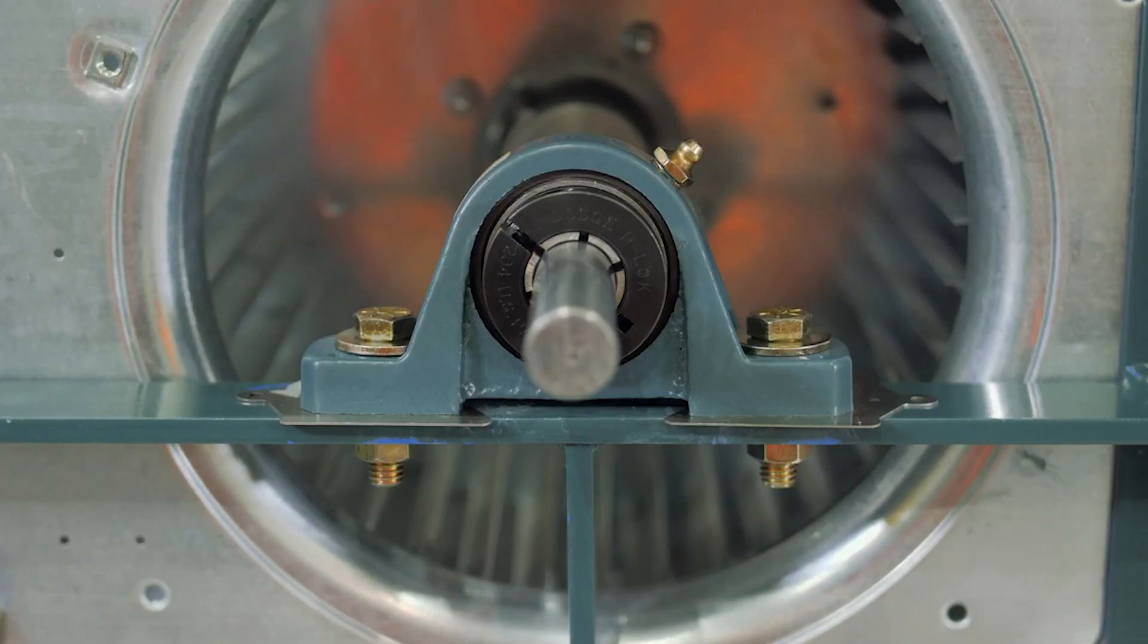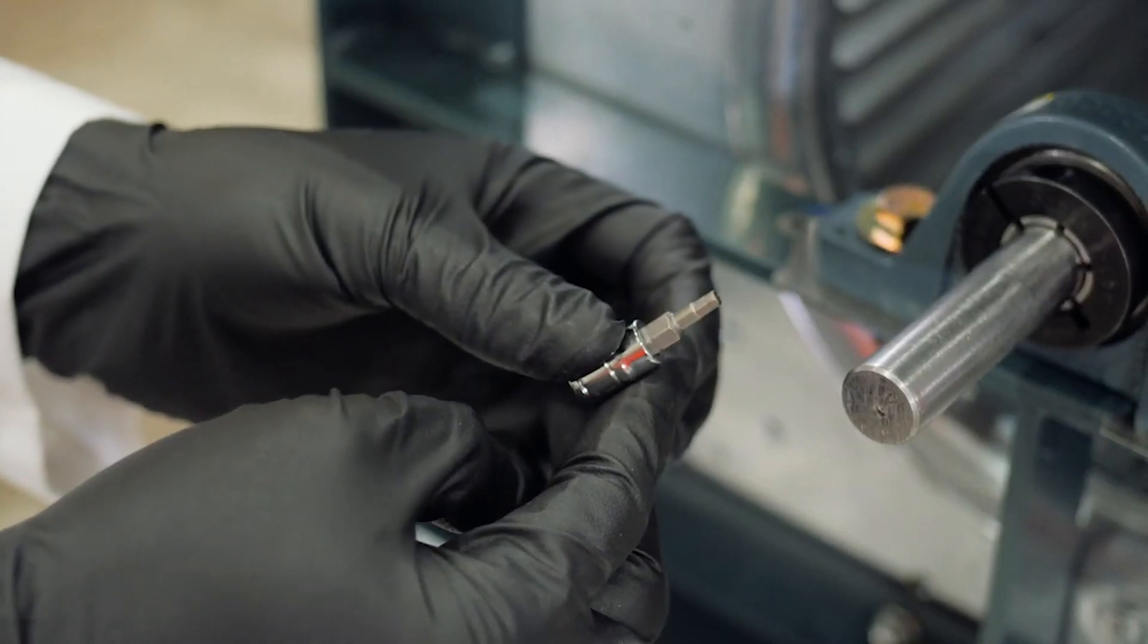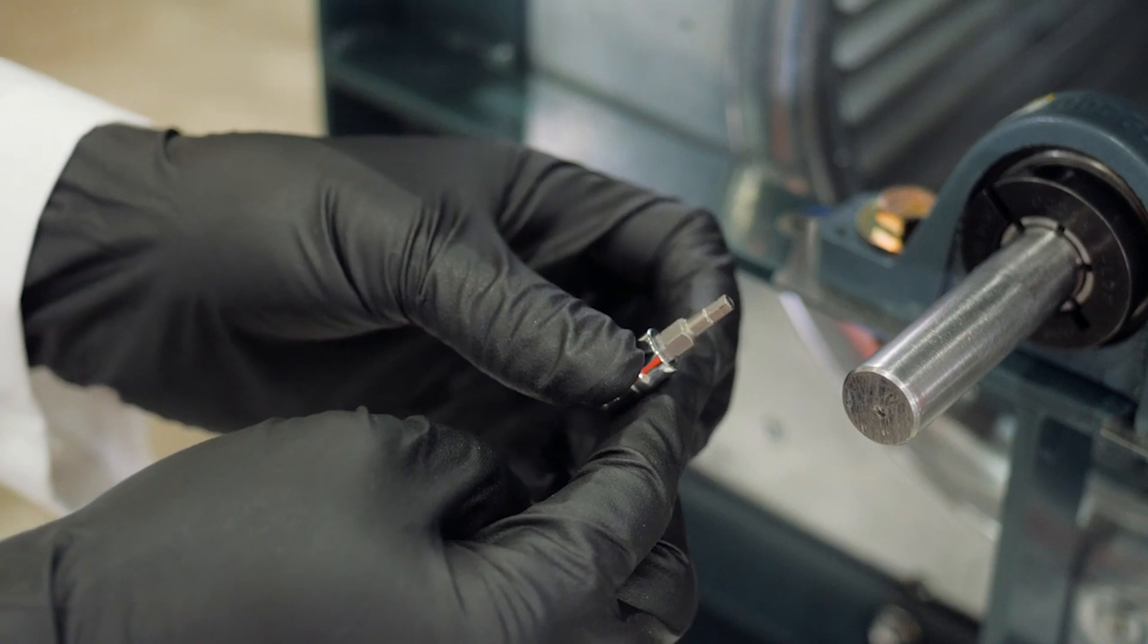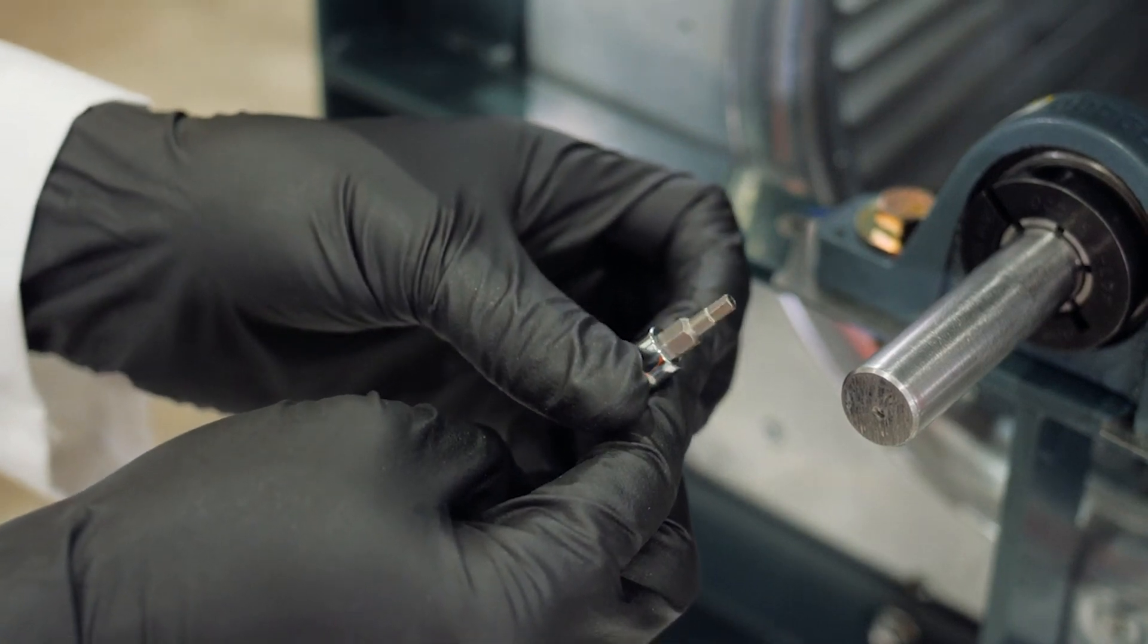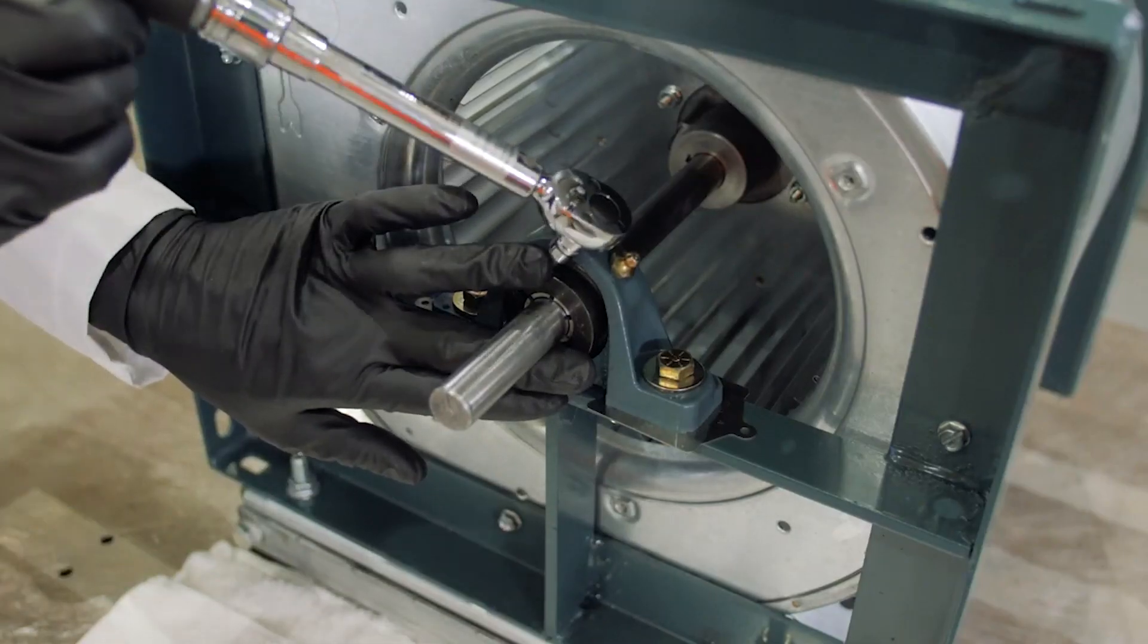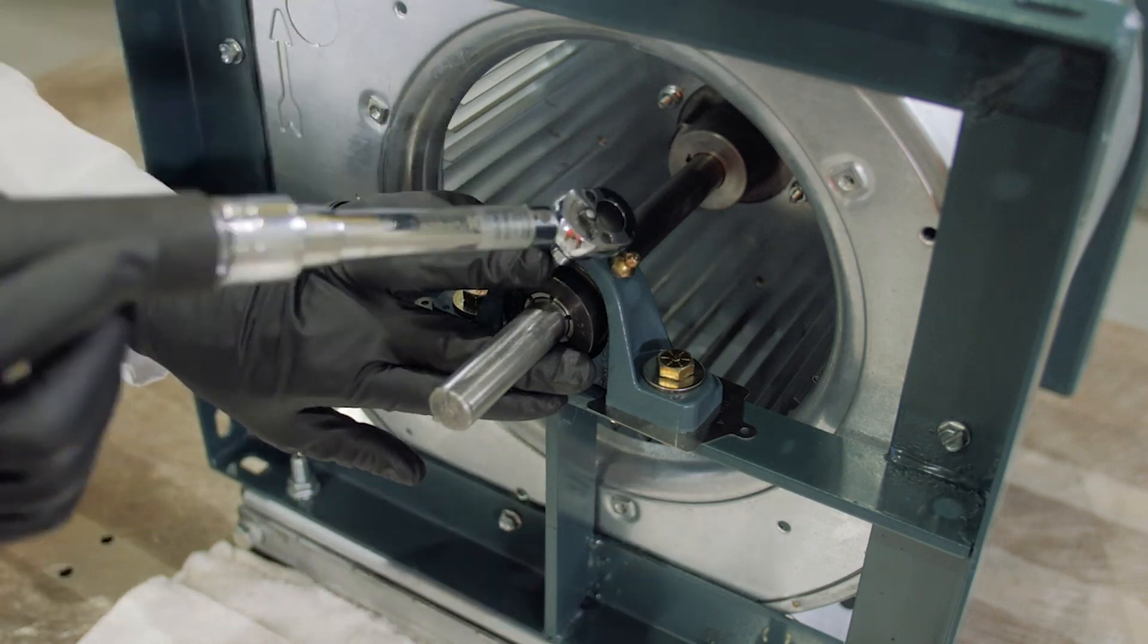The next step is to fasten the bearings to the shaft. To achieve proper installation torque, ensure the hex driver is in good condition with no rounded corners. To prevent rounding, the hex driver should be fully seated during tightening.